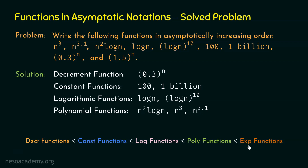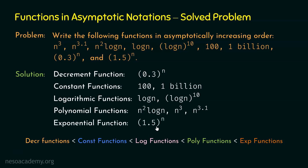For exponential functions, we are left with 1.5^n. This is exponential because it is of the form c^n where c is a constant. Here 1.5 is the constant and n is the input size. Therefore, 1.5^n is the exponential function.